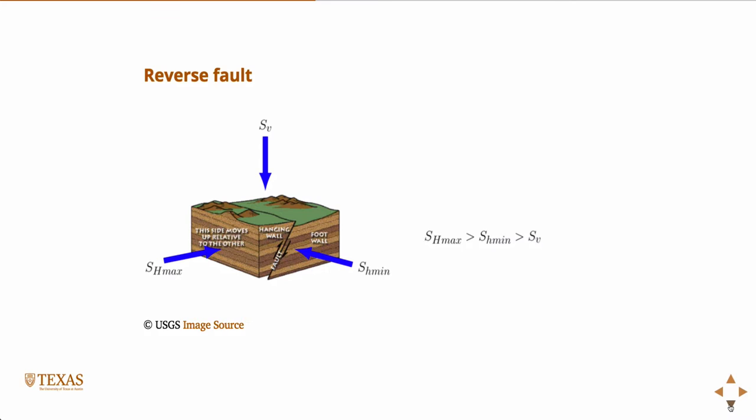Because essentially the hanging wall is moving in a direction where there's some force pushing on it, but the other two forces must be greater than that to accommodate that motion, to overcome the force pushing on it - the vertical stress, the force of gravity. So in the reverse faulting regime, the vertical stress is the smallest, and then you just order the other two.